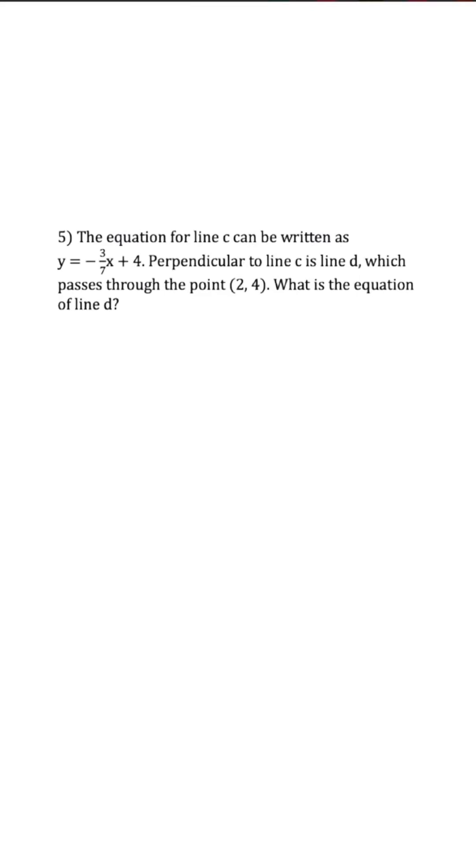Line c is equal to negative three over seven x plus four, and they want us to write the equation of a perpendicular line that passes through the point (2, 4). So the most important thing is first to understand perpendicular and the slope.